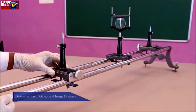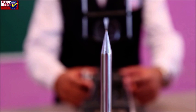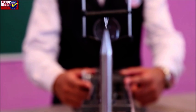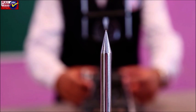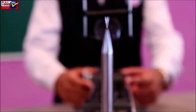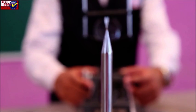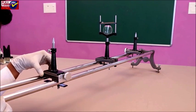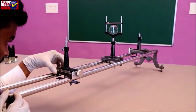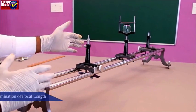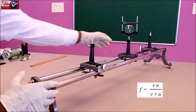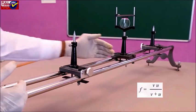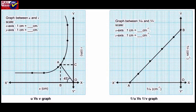Determination of object and image distance: Adjust the object needle and image needle so that you get a real, inverted and magnified image beyond 2f. The image needle and the image should be coincident. Ensure that the tip of the image needle touches the tip of the image. Adjust the image needle so that there is no parallax error. Apply index correction using a horizontal needle to ensure that the tips of the object needle, image needle, image, and optical center O of the lens all lie on the same line. The focal length of the convex lens can be calculated using the lens formula. Find the focal length for each set of observations, plot the graph between u and v or 1/u and 1/v, and determine the value of f from the graph.